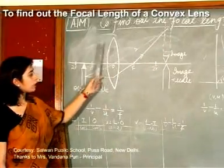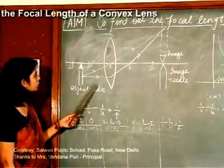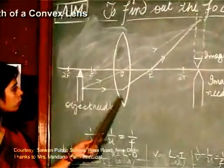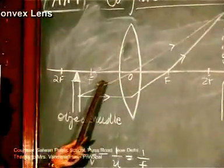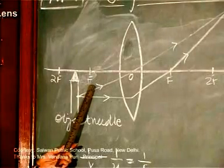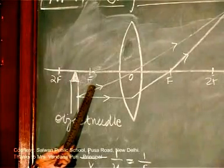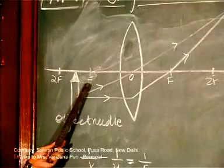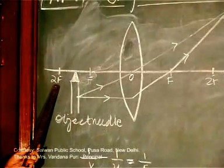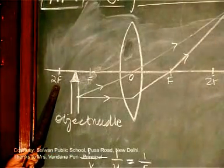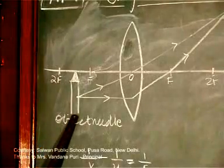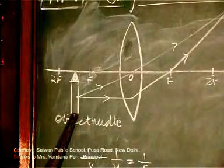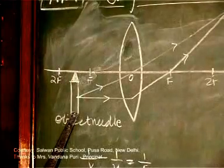The ray diagram for the experiment is as follows. This shows the convex lens with optical center O. This is the focal length of this convex lens, which you will be finding out when we start the experiment. If f is known, 2f is automatically known. We will again be using two needles — the first one acts as the object, and the second one is used to locate the position of the image.